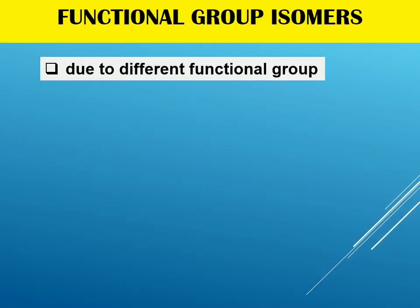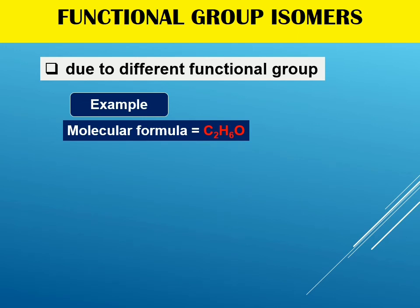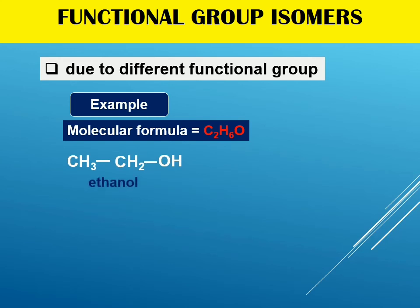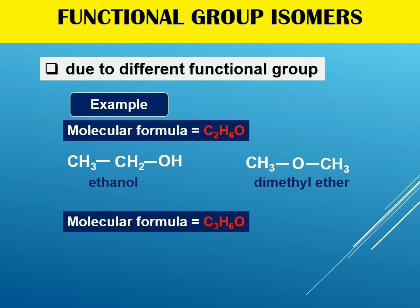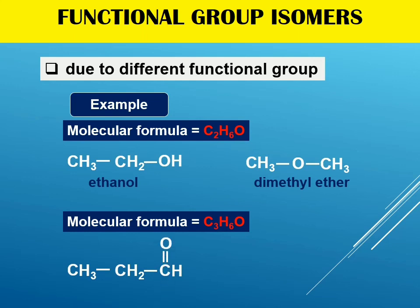Looking at examples: for the molecular formula C2H6O, I can draw the structure as an alcohol. Alcohol has functional group isomers with ether, so I can also draw it as CH3OCH3, which is dimethyl ether. For C3H6O, I can draw CH3CH2CHO, which is propanal — belonging to the aldehyde group. Since aldehyde has functional group isomers with ketone, I can also draw the structure as CH3COCH3, which is propanone.